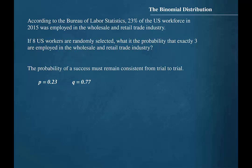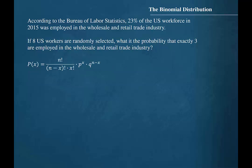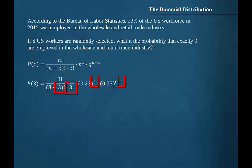The probability of a failure will remain constant at 1 minus 0.23, which is equal to 0.77. Since we have determined that the criteria for a binomial experiment are satisfied, we can use the formula for calculating a binomial probability. We will substitute 8 for N, 3 for X, 0.23 for P, and 0.77 for Q in the formula. The probability that exactly 3 out of 8 randomly selected U.S. workers in 2015 would be employed in the wholesale and retail trade industry is 0.1844.